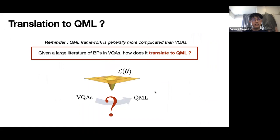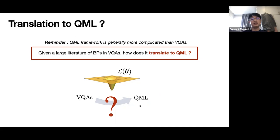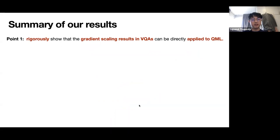Given the large literature on barren plateaus in VQA, it's natural to ask: how does this translate to the QML setting? Given that QML is generally more complicated than VQA, can results from VQA be translated into QML? This brings us to our work. Let me first summarize our results. Point one: we rigorously show that gradient scaling results in VQA can be directly applied to the QML setting. This means all features unfavorable for VQA trainability — deep unstructured circuits, global measurements — should also be avoided when constructing your QML model.